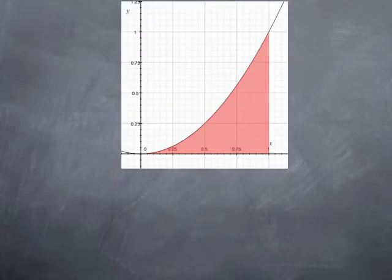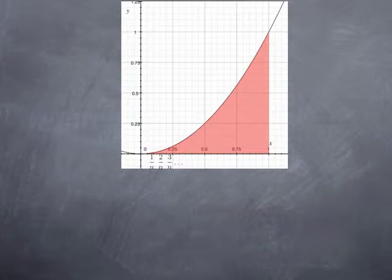Let's go back to the case of x squared over the interval 0, 1 and try to formalize this process. Let's say I divide the interval 0, 1 into n equal parts. That means each sub-interval is going to have length 1 over n. So I have a first interval from 0 to 1 over n, a second interval from 1 over n to 2 over n, a third from 2 over n to 3 over n, and so forth.